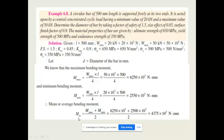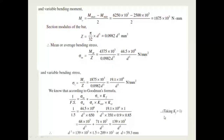The mean bending moment M_mean = (M_max + M_min) / 2 = 4375 × 10³ N·mm. The variable bending moment M_v = (M_max − M_min) / 2 = 1875 × 10³ N·mm. The section modulus Z = (π/32) × d³ = 0.0982 d³ mm³.